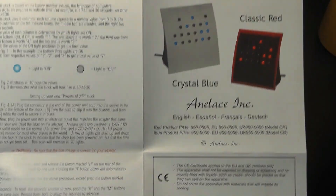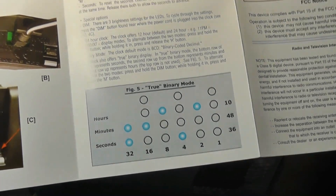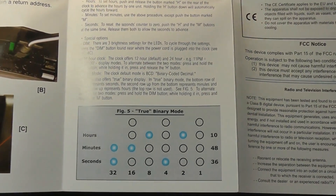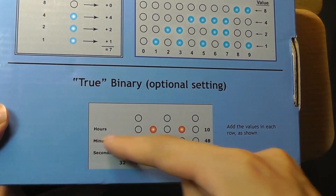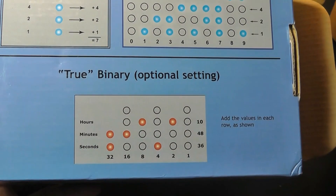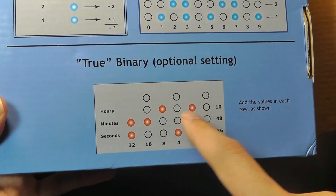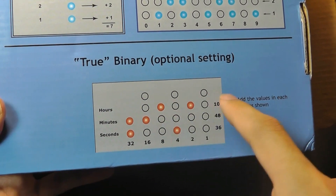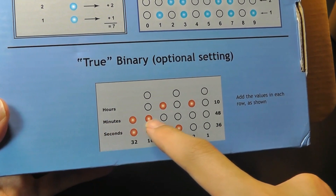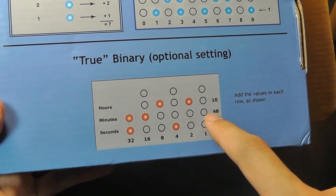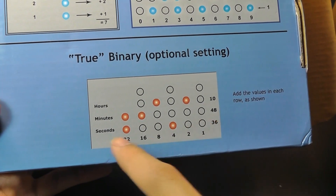There's also a second mode called the true binary mode that you can switch to if you are tired of that classic way of looking at the time. You would now add the values of each row together instead of by each column. So right now we have, again, 10:48:36 seconds. It's 10 o'clock because we have the 8 and the 2 LEDs lit in the first row representing hours. The second row represents minutes — 32 plus 16 equals 48 for the minutes. And for seconds, we have 32 plus 4 which equals 36 seconds.